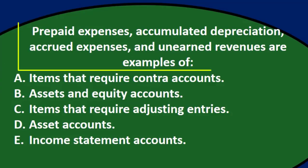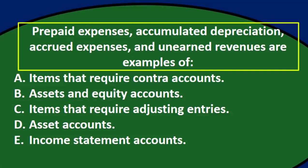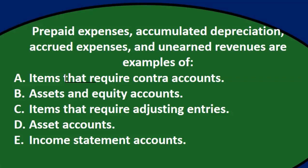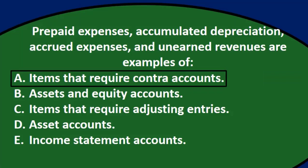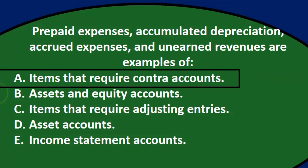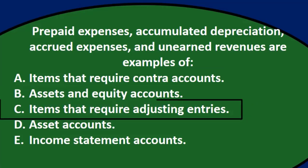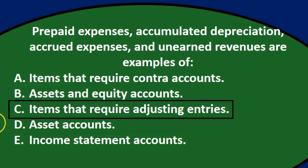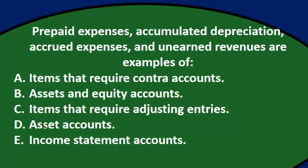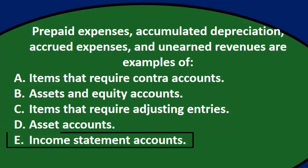Next question: prepaid expenses, accumulated depreciation, accrued expenses, and unearned revenues are examples of — A, items that require contra accounts; B, assets and equity accounts; C, items that require adjusting entries; D, asset accounts; E, income statement accounts.